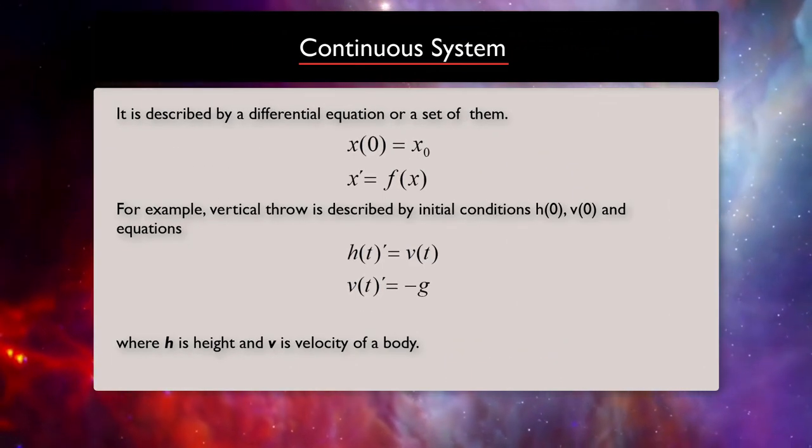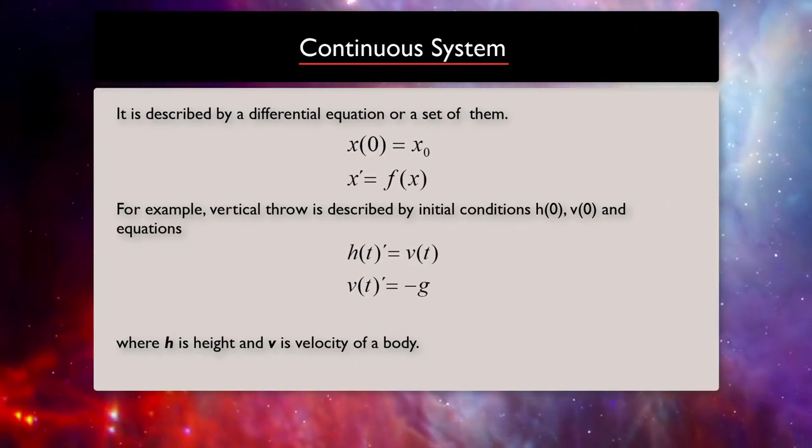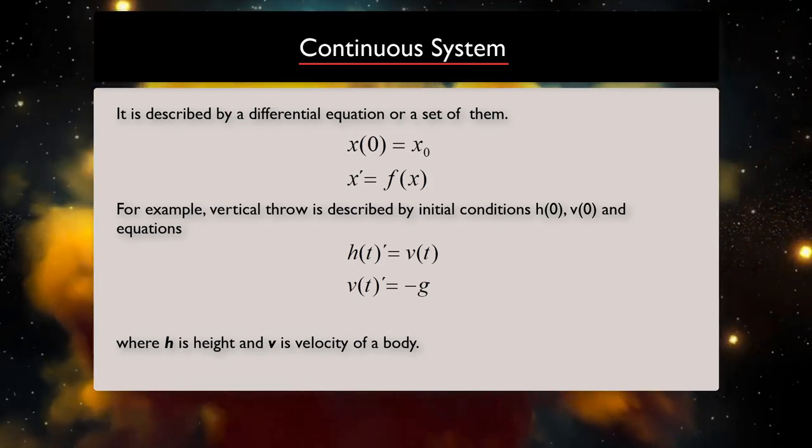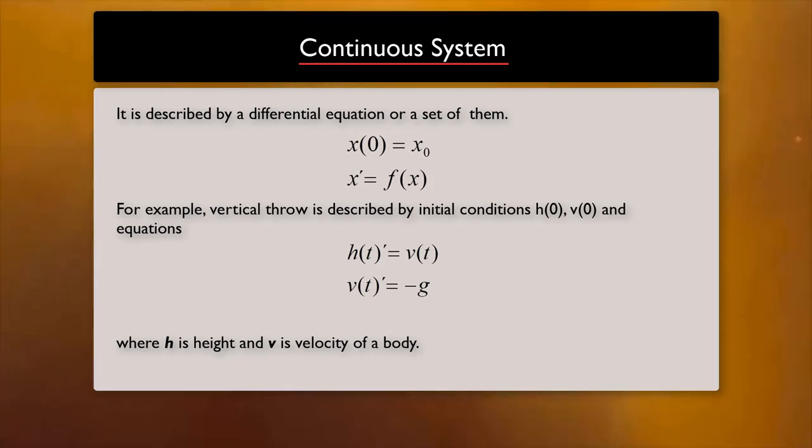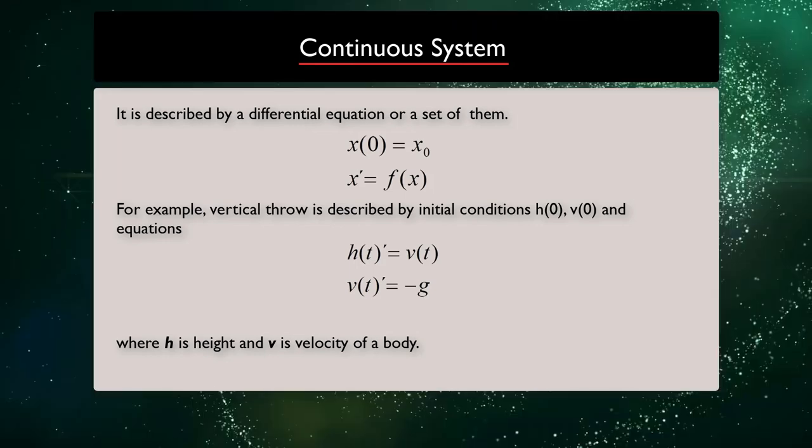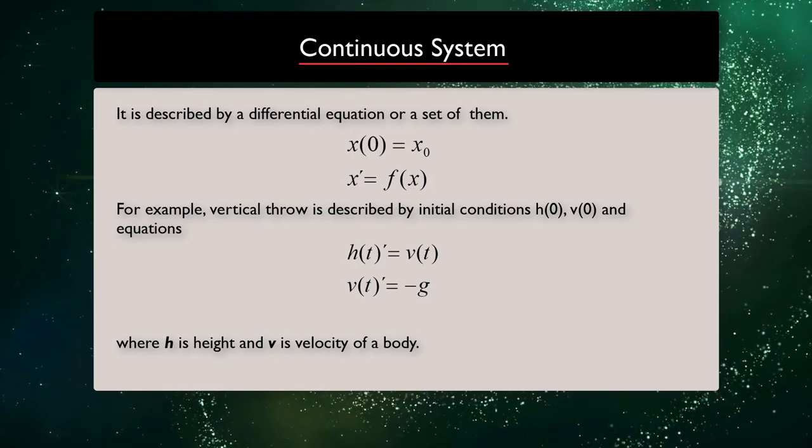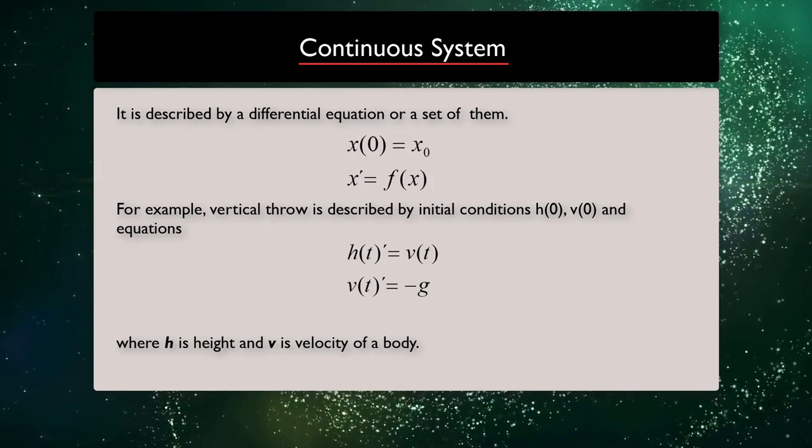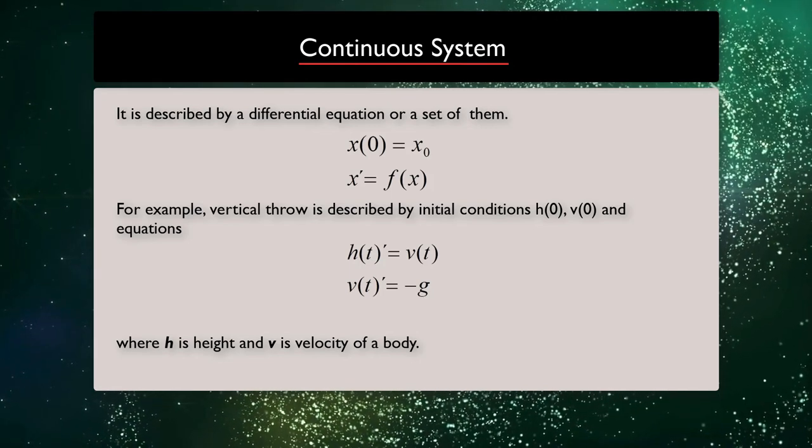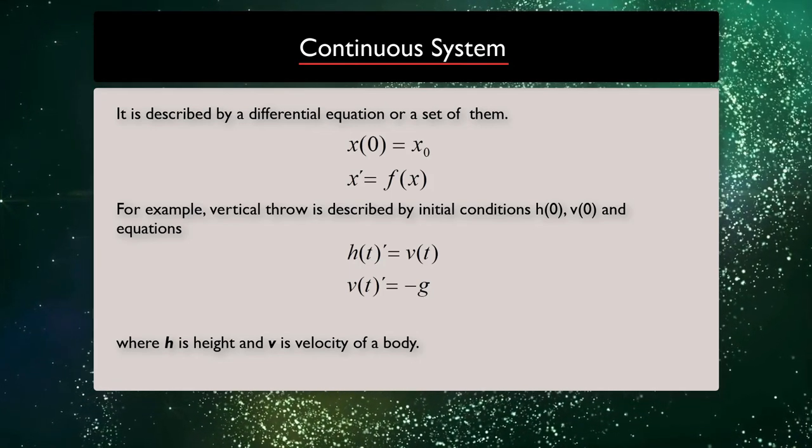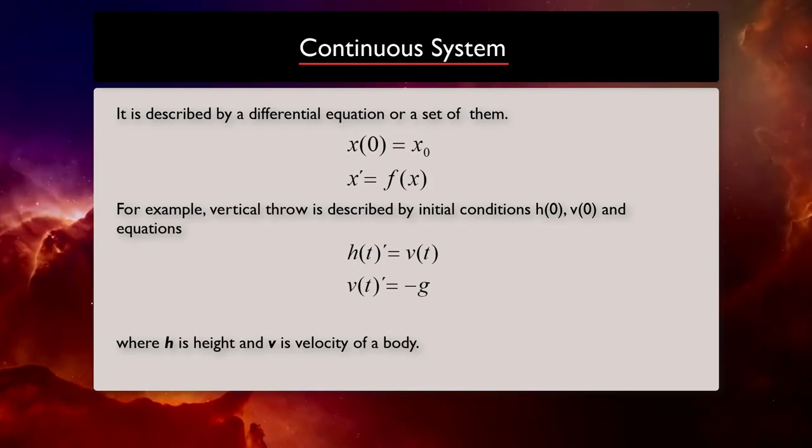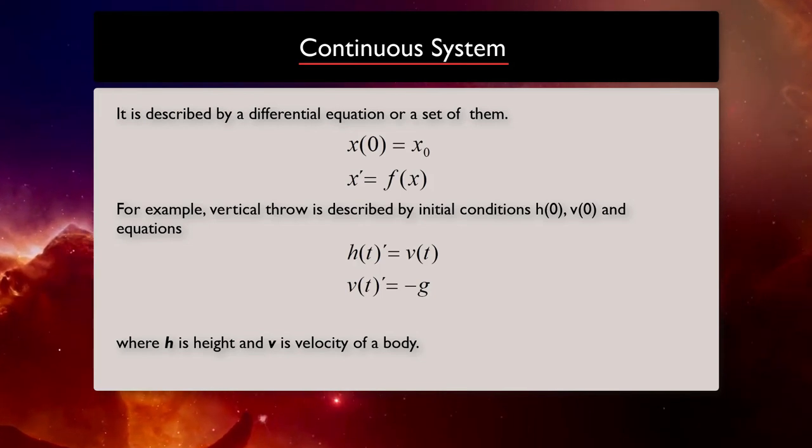In a continuous system, the time interval between our measurement is negligibly small, making it appear as one long continuum. This is done through the language of calculus and using differential equations or a set of them. For example, you can think of a vertical throw of a ball or any other object, which can be described by initial conditions and the height and velocity of the ball or the object of interest. You can see the equations here, the differential equations, which can describe this system.